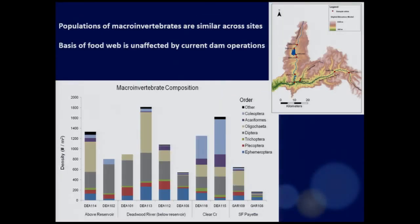Another interesting result: we collected macroinvertebrates, which form the food chain for higher aquatic species. We sampled in the upper natural part of the Deadwood system, below the reservoir, and in nearby systems. All of them statistically represented the same distributions. This means that dam operations so far didn't have as strong an impact on macroinvertebrates as we were assuming.